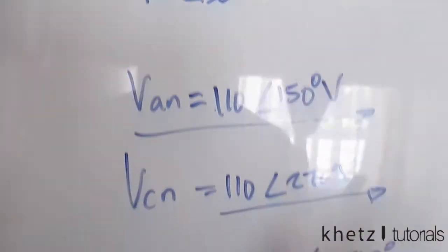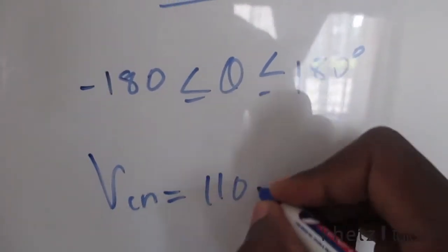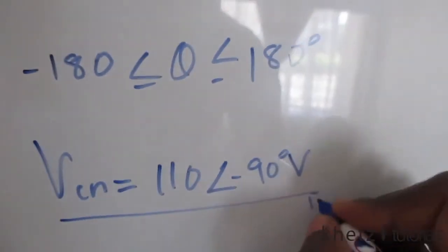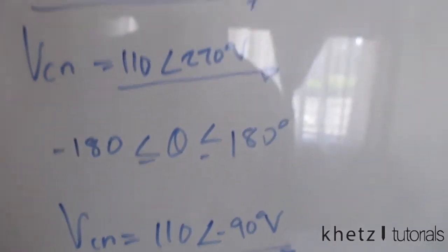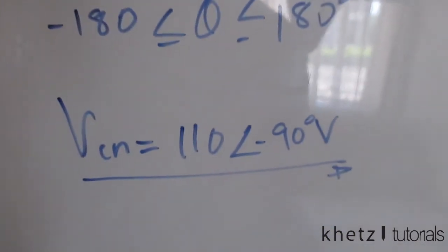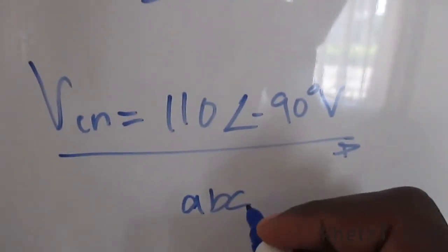So 30 subtract 120 should give you a VCN of 110 with an angle of negative 90 degrees. So those are your two values for VAN and VCN given VBN and a positive or an ABC sequence.